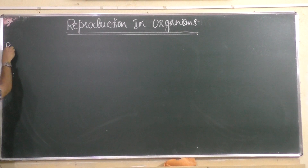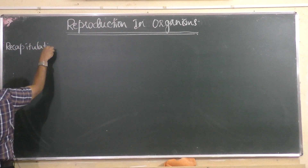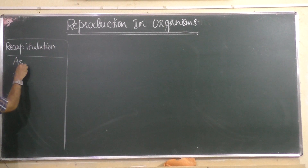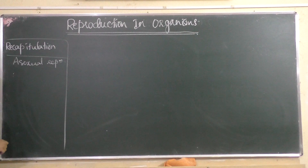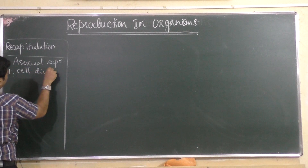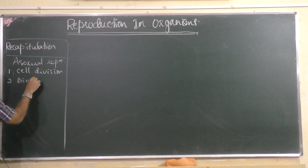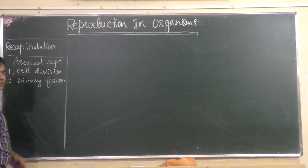Let us recap what we have learned in our last class. We discussed different methods of asexual reproduction. Either it is simple cell division in case of monerans and protists, where one cell divides into two, or it is binary fission where one cell divides into two daughter cells, then two divide into four, and so on — as in amoeba.